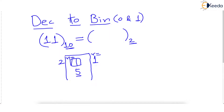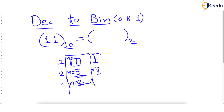Once we have the quotient, we call it n again. So n is no longer 11 — n was 11, but now n is 5. We again divide this new n by 2: 2 times 2 is 4, remainder is 1. The new remainder is 1 and the new quotient is 2.